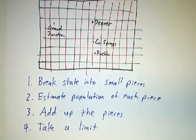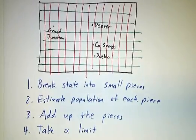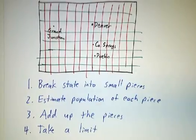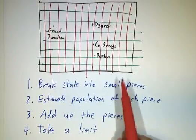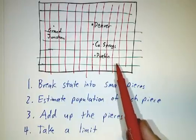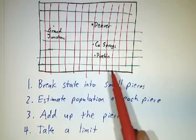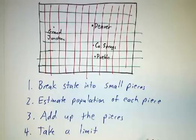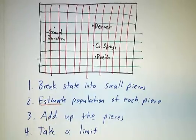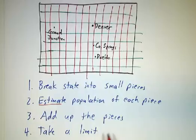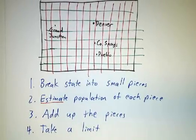We need to figure out the population of each little block, and then if we can figure out the population of each little block, we add them all up and we'll get the population of the entire state. Of course, we only estimate the population of each piece, and when we estimate we're going to make some errors. So we want to get more and more accurate by chopping things up finer and finer and taking a limit.